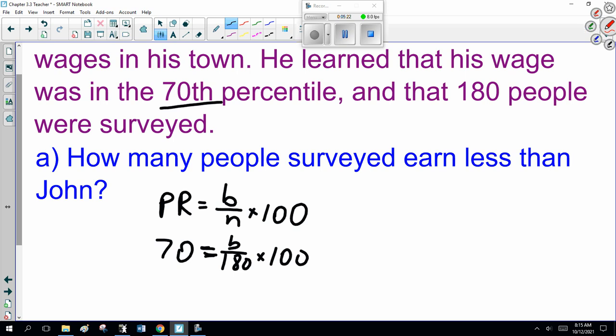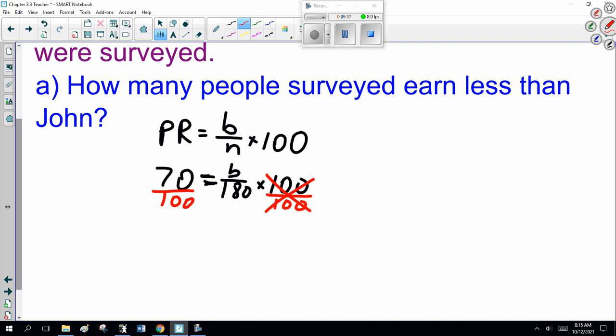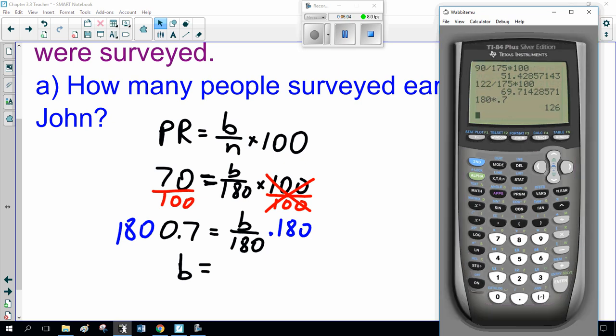How do we solve for B here? Well, notice it's times 100, so I divide both sides by 100. So, this is 70 divided by 100 is 0.7. Now, this is B divided by 180. How do you get rid of divide by 180? You multiply both sides by 180. So, the number of people below him, 180 times 0.7 is 126.